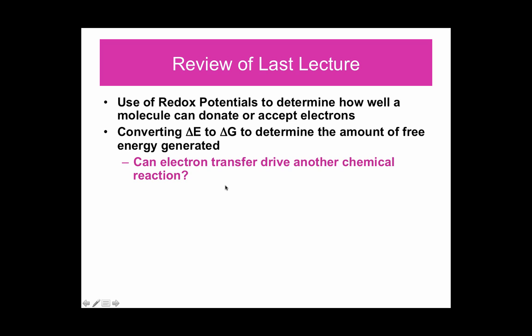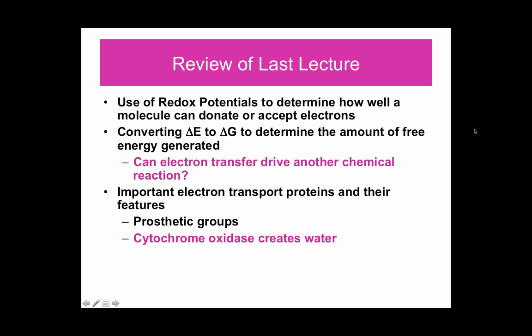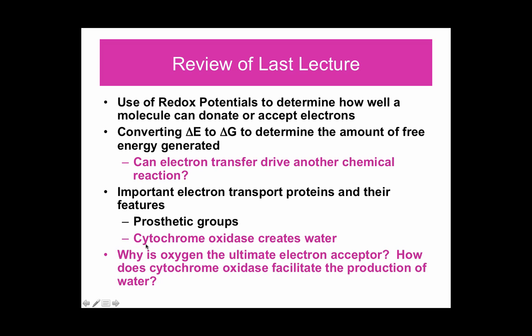That also gives the idea of whether electrons can be transferred in a different direction during a chemical reaction. We also looked at important electron transfer proteins: complex 1, complex 3, complex 4, which allow for transfer of protons across the membrane, and complex 2, which allows the input of electrons through donation from FADH2. We also looked at molecules with prosthetic groups like hemes or sulfur-iron groups. At the end, we concluded about the cytochrome C oxidase, which reduces oxygen to create water, and how oxygen is the ultimate electron acceptor.